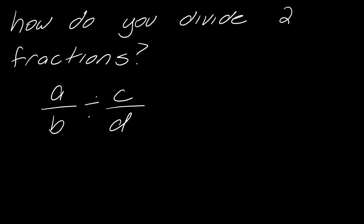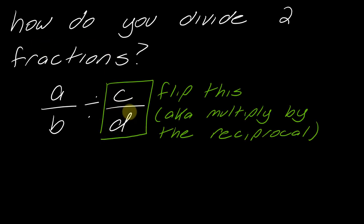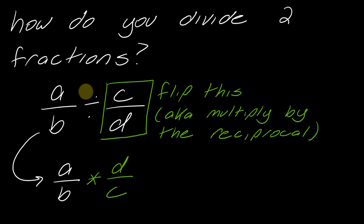How do you divide two fractions? If I've got A over B divided by C over D, the key is that you want to flip the second fraction and then turn it into multiplication. Another way to say that is that we multiply by the reciprocal. Some people remember this phrase; other people remember "flip and multiply" — but it's always that second fraction. So A over B divided by C over D turns into A over B times D over C, and from there you just multiply straight across, leaving you with AD over BC.